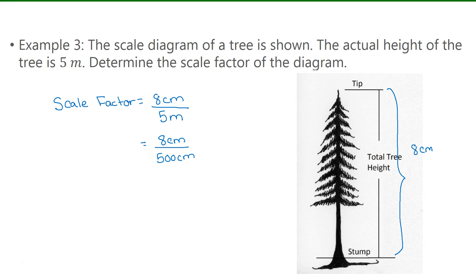Now that we have the same units, we can express the scale factor in different ways — as a fraction, decimal, percent, or ratio. I'm going to change this one to a decimal: 0.016. If the decimal were irrational and didn't terminate or repeat, I would keep it in fraction form.